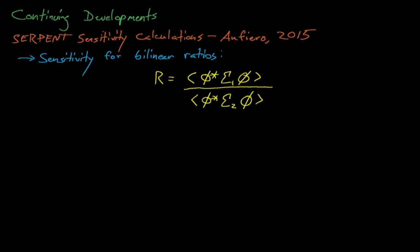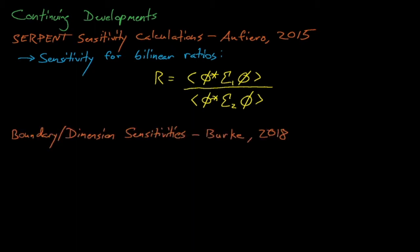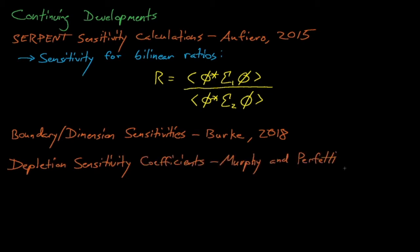In 2018, Burke, a graduate student at Michigan working with Brian Kudrowski and Forrest Brown, developed an approach for approximating the sensitivity of eigenvalue responses to uncertainty in boundary or system dimensions. And in 2021, Murphy, a graduate student at UNM, and Perfetti developed an approach for estimating sensitivity coefficients for time-dependent depletion responses in Monte Carlo simulations. The exciting field of sensitivity analysis continues to grow to this day.